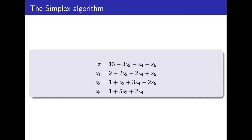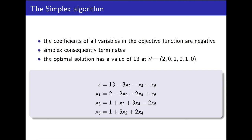At a glance, you should be able to tell that the basic feasible solution is 13. Looking closely at the objective function, we see that no variable has a positive coefficient, and so the simplex algorithm terminates. The basic feasible solution for this slack form is the optimal solution for the whole linear program. The objective function has an optimal value of 13 at the settings described by the vector x.